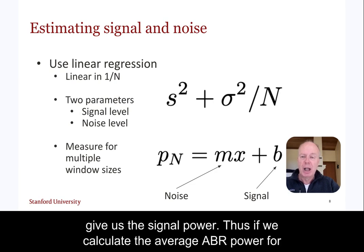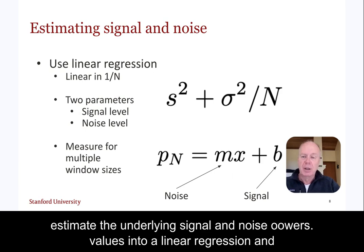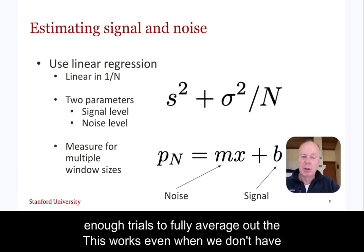Thus, if we calculate the average ABR power for different sized windows, we can plug these values into a linear regression and estimate the underlying signal and noise powers. This works even when we don't have enough trials to fully average out the noise.